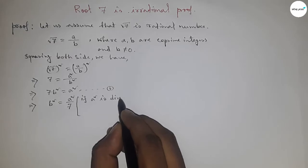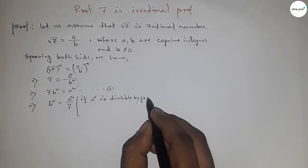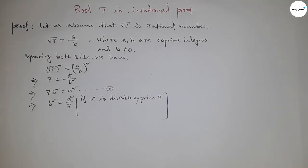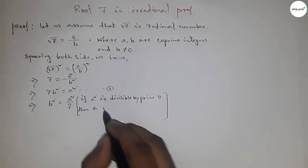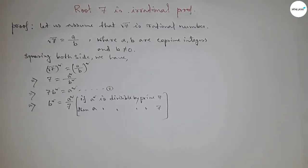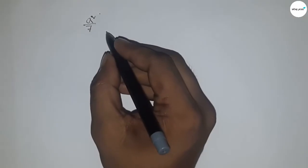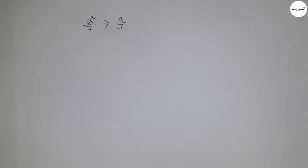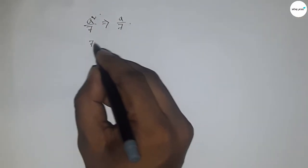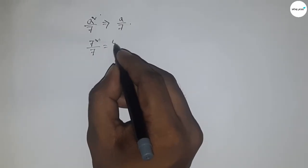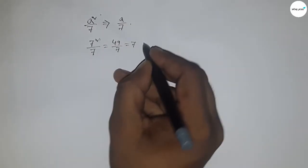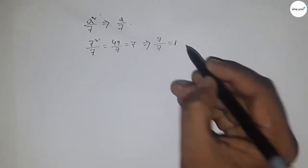Now I'm going to use a theorem: if a² is divisible by a prime 7, then a is also divisible by the prime 7. Let's explain with an example. If a = 7, then a² = 49; 49 divided by 7 equals 7, which implies that 7 is also divisible by 7.